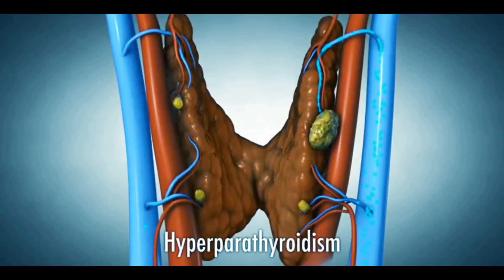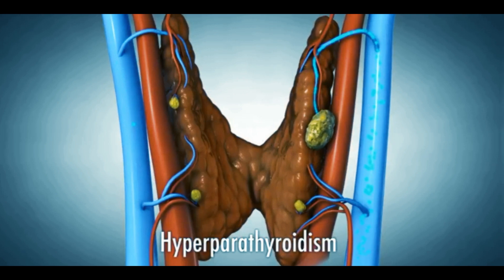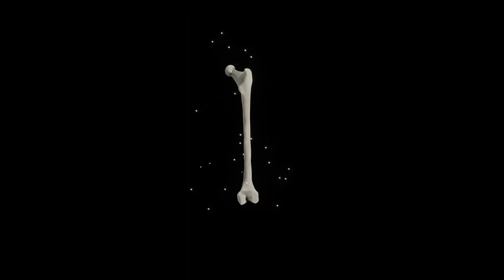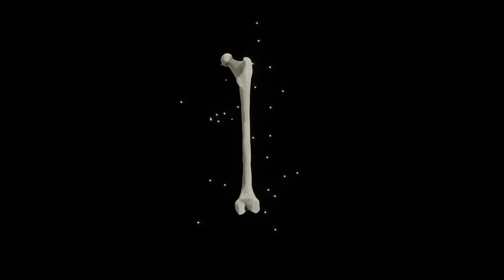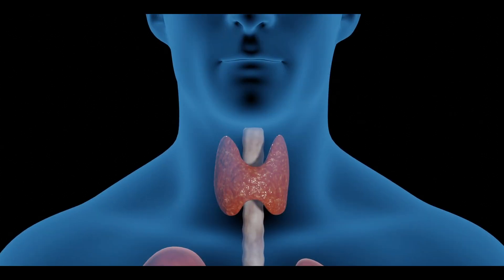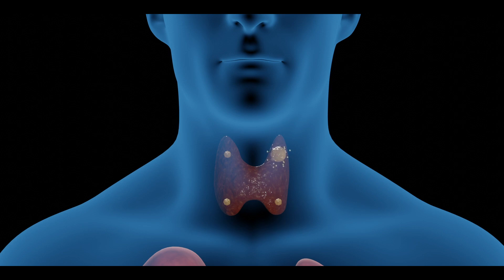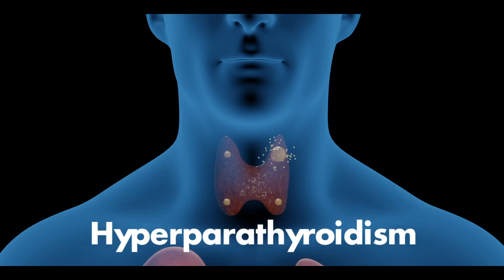These enlarged parathyroid glands release parathyroid hormone in large quantities, which causes release of calcium from bones into the blood to normalize the blood calcium level. In this situation, overproduction of parathyroid hormone begins, which is called hyperparathyroidism.